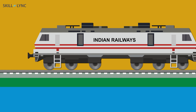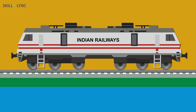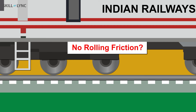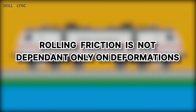We'll take another example of a train on rail tracks. The wheels of trains are normally made of hardened steel, so the deformation that they undergo is very little and is negligible in value. Since that deformation is negligible, they shouldn't have any kind of rolling friction, right? Well, no.